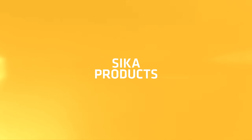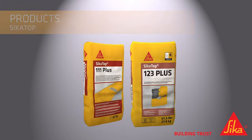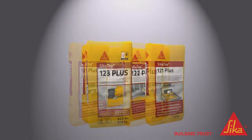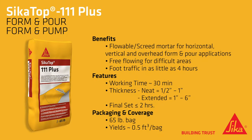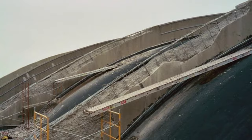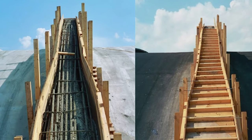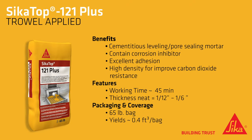Sika offers a variety of products for the previously described applications. Sika Top offers a full range of repair materials with polymer modification and a corrosion inhibitor for the most demanding interior and exterior applications. Sika Top 111 Plus is a fast-setting flowable mortar for formed applications which can be extended to form a concrete. Sika Top 121 Plus is a fast-setting mortar for leveling and resurfacing applications; its high density aids protection against carbon dioxide.